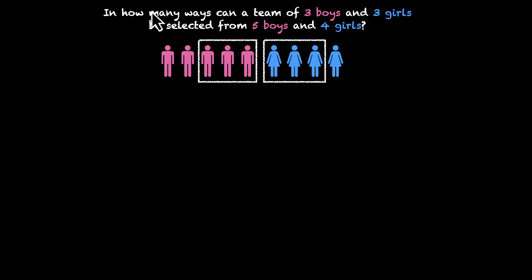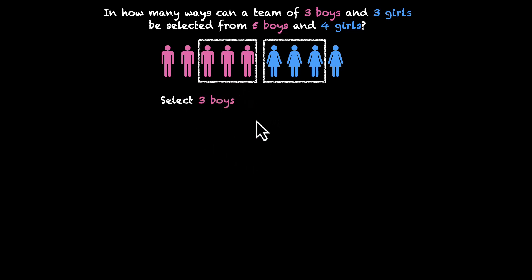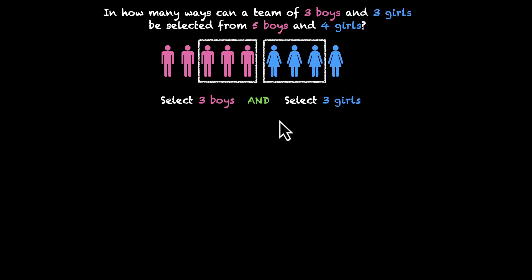So if we break this task down, we're actually doing two things: we're selecting three boys out of these five, and we're selecting three girls out of these four. So how do we figure out the number of ways of selecting? Let's recap this using an example that we saw in the previous video.